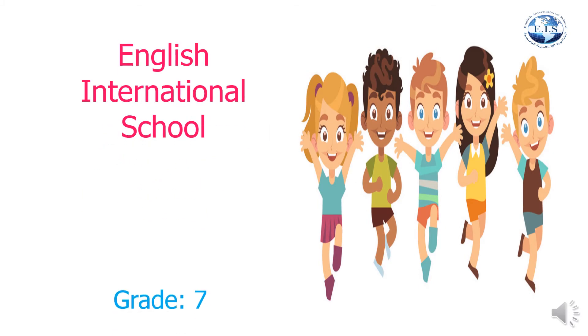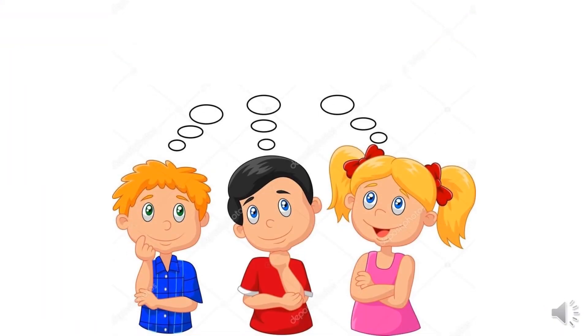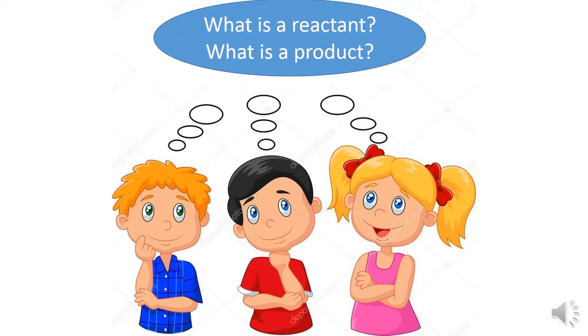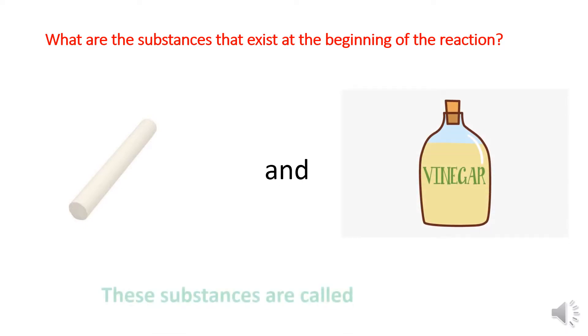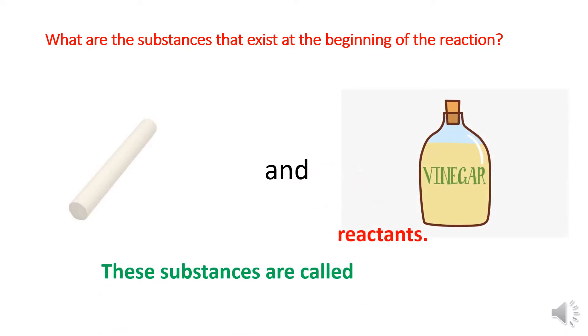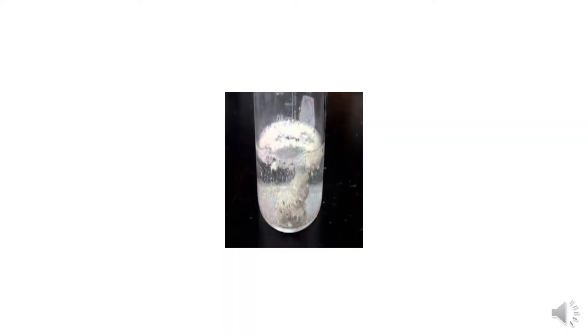Dear seventh graders, we are going to continue the chemical reaction lesson. Let's discuss the second objective: what is a reactant? Let's go back to the reaction between chalk and vinegar. What are the substances that exist at the beginning of the reaction? Chalk and vinegar. These substances are called reactants. Reactants are substances that exist before the start of the reaction.